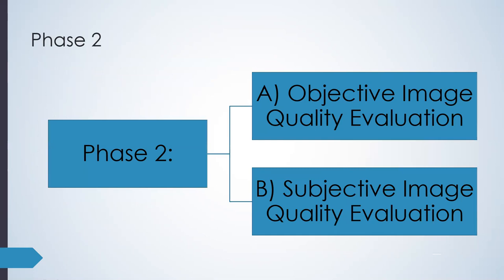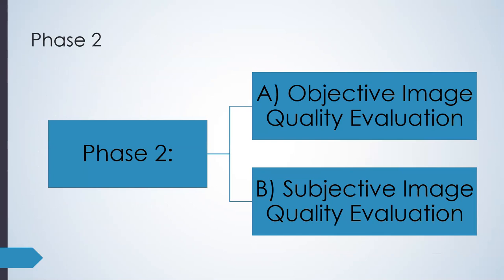Phase two was composed of the objective image quality evaluation and the subjective image quality evaluation. For the objective evaluation, this involved the calculation of SNR and CNR. Two regions of interest situated on the lower left lobe and lower right lobe of the liver were selected as the signal, while another two ROIs were selected on background areas as noise. Equations were used to calculate the SNR and CNR for every image, and the regions of interest were kept constant for every image in both shape and size.